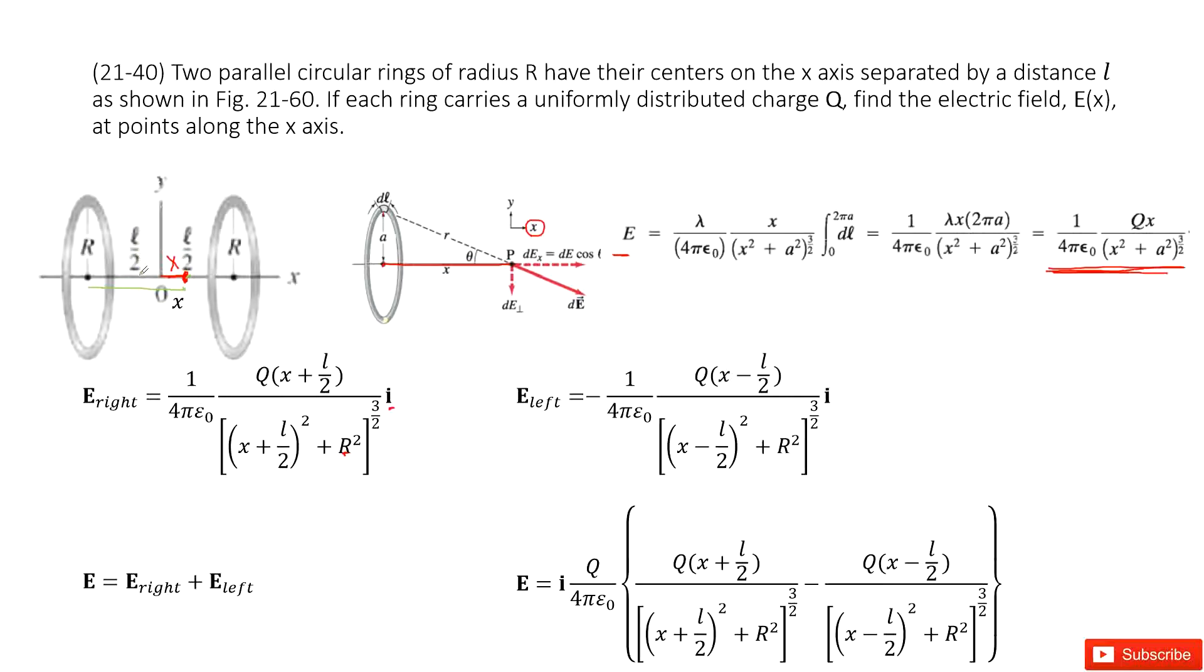So it looks like we need to use x plus L over 2 to replace this x, because this x tells the center of the ring to the location. This one is the distance between the center of the ring to the location. Agree?